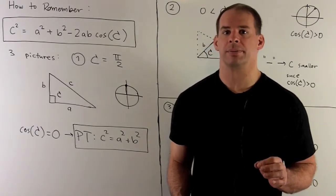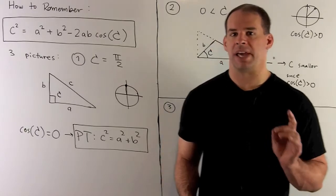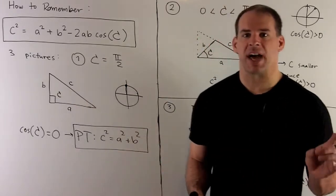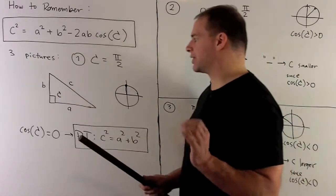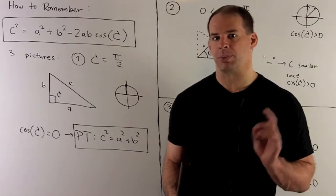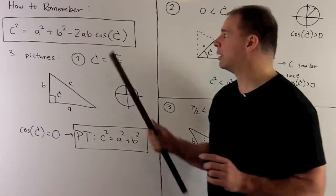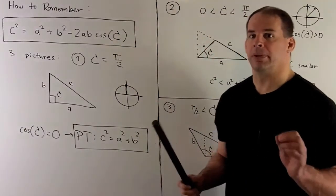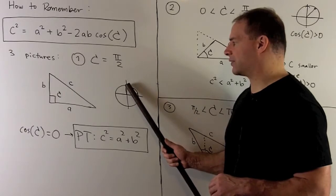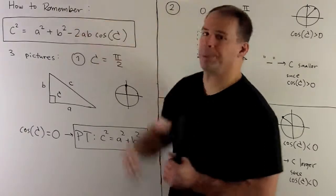A few pointers on remembering the law of cosines. First pointer: the Pythagorean theorem is a special case. If we take a right triangle and label the right angle capital C, the opposite side is the hypotenuse. With side lengths a, b, and c, we get c squared equals a squared plus b squared. In the law of cosines, if capital C equals pi halves, cosine of pi halves is zero — found by taking the x-value at pi halves on the unit circle — so the law of cosines collapses to the Pythagorean theorem.